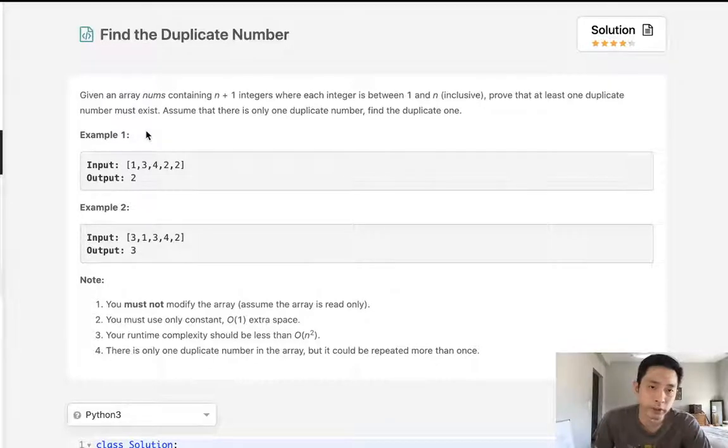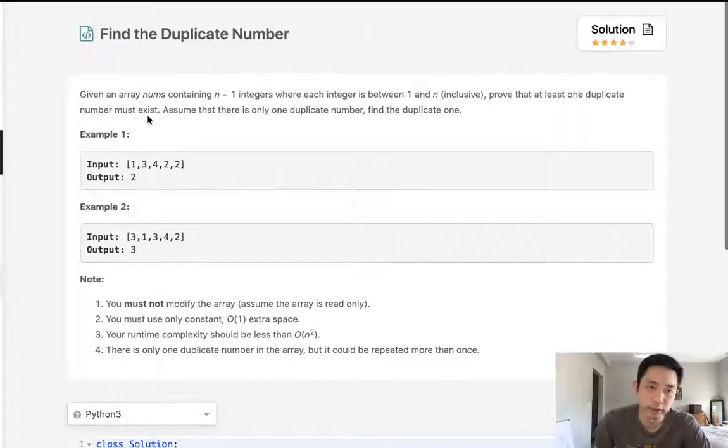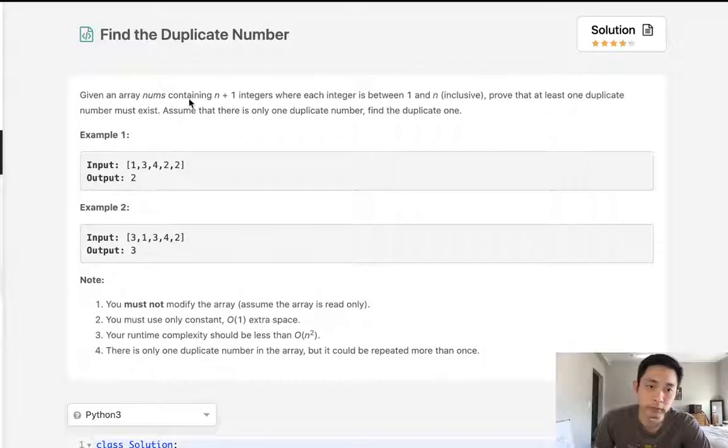Welcome to June's legal challenge. Today's problem is find the duplicate number. Given an array of nums containing n plus 1 integers where each integer is between 1 and n inclusive, prove that at least one duplicate number must exist.